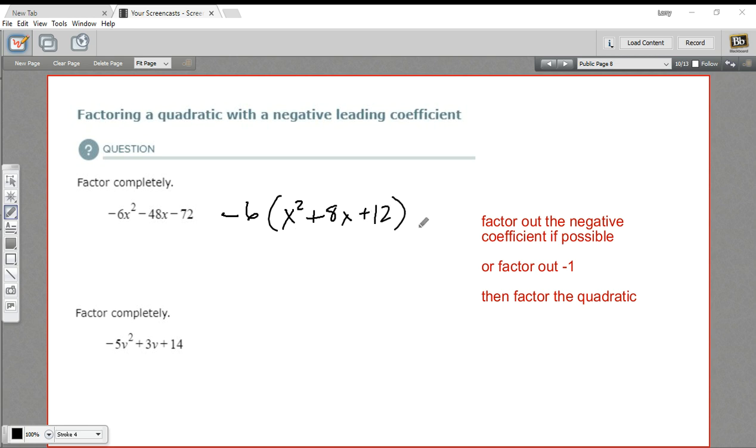Okay, so we factored out a negative 6. Now we can just focus on this piece and try to factor it as we normally would. Let's see, everything's positive here, so I'm going to have x plus something and x plus something. And it has to multiply to 12 and add up to 8. That's going to be 2 plus 6. Yeah, that checks out. So our final answer here is a negative 6 times x plus 2 times x plus 6.